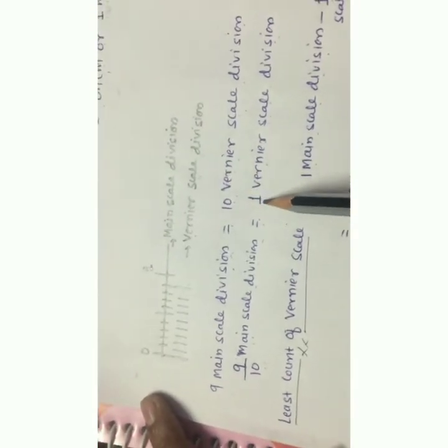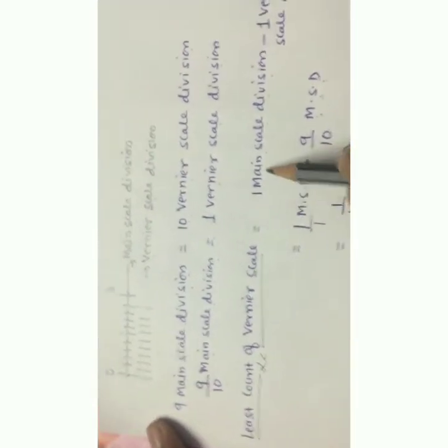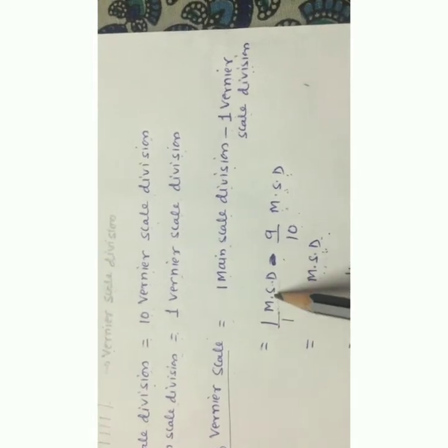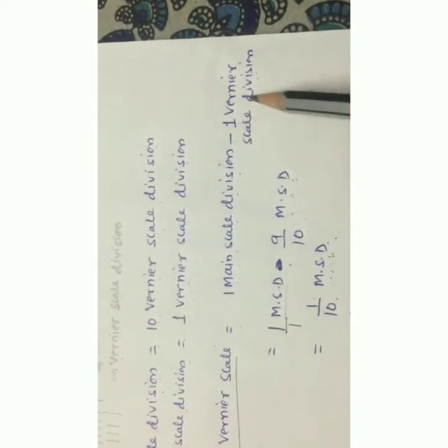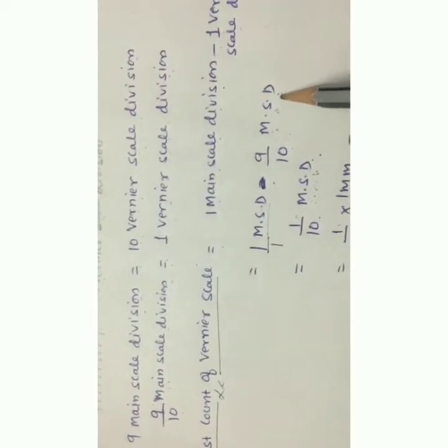So 9 main scale divisions equals 10 vernier scale divisions. Therefore 1 vernier scale division equals 9/10 of a main scale division. The formula to find the least count of the vernier scale is: 1 main scale division (MSD) minus 1 vernier scale division. Substituting, that is 1 MSD minus 9/10 MSD.